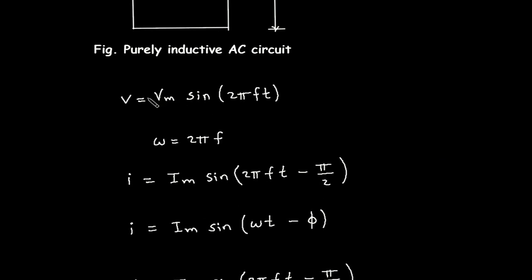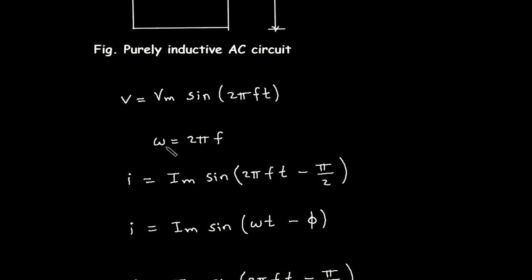The equation for instantaneous voltage is V equal to Vm sin(2πft), where 2πf represents omega. The equation for instantaneous current is I equal to Im sin(2πft − π/2), where 2πf is again omega, or angular frequency.